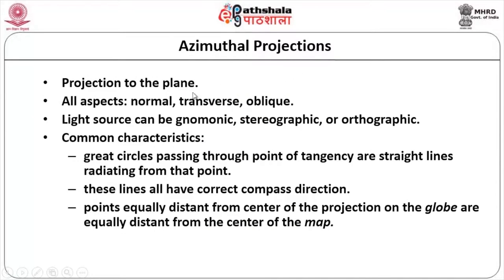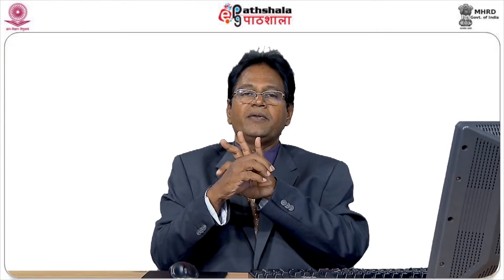In azimuthal projection, all aspects — normal, transverse, and oblique — are considered. The light source can be one of three: gnomonic (center of globe), stereographic (exactly opposite point of globe), or orthographic (from infinity). That is a biggest advantage because the light source can start from anywhere — infinity, the point opposite the globe, or the center of the globe.